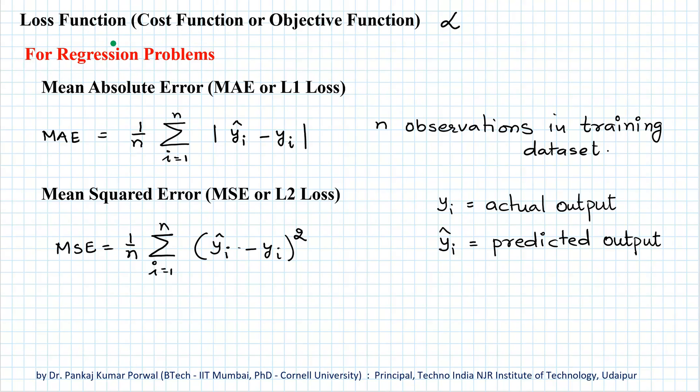So for example, for regression problems, the most common loss functions are mean absolute error, which is defined as average of the absolute value of difference between predicted output and actual output, and here n is number of observations in our training dataset. The mean absolute error is also called L1 loss because L1 norm of difference between predicted output and actual output is defined as absolute value of their difference. The second loss function for regression problems is mean squared error, where we take average of square of difference between predicted output and actual output. And the mean squared error is also called L2 loss because L2 norm of difference between predicted output and actual output is defined by square of difference between the two.